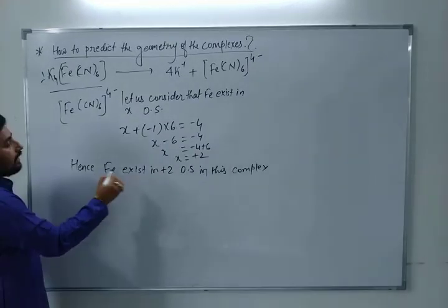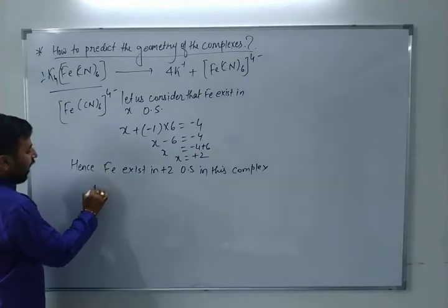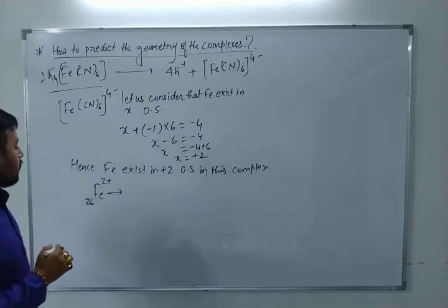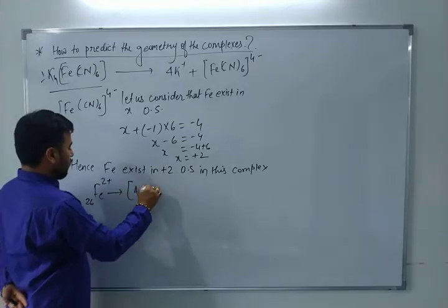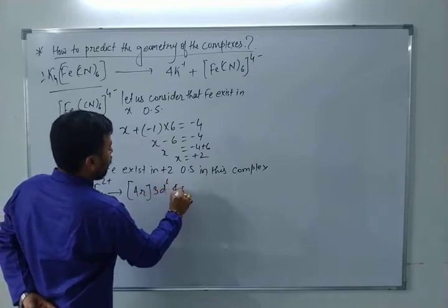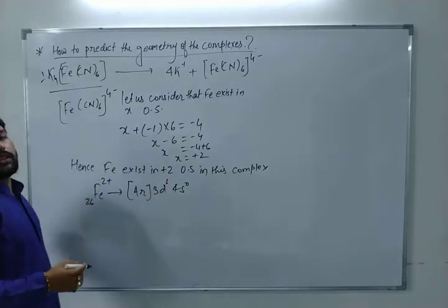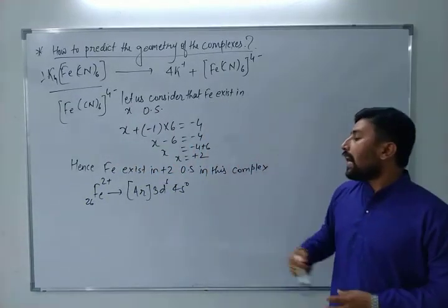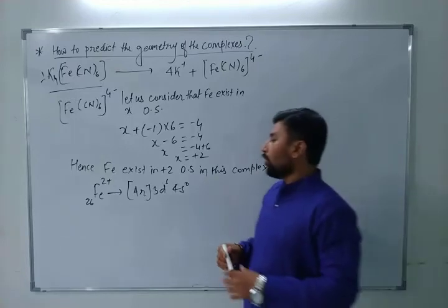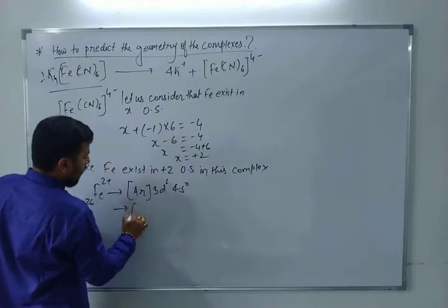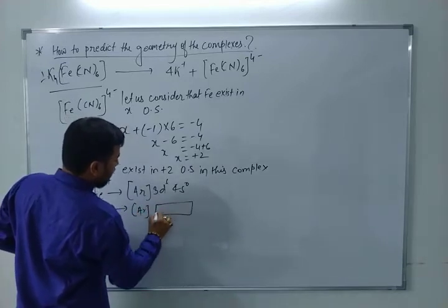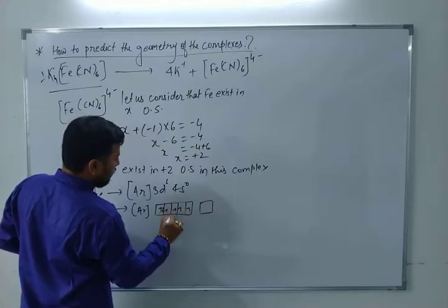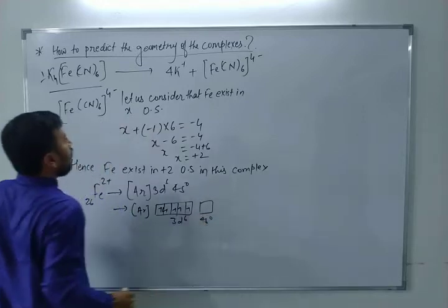Iron exists in +2 oxidation state, so we have Fe²⁺. The electronic configuration of iron in this compound is [Ar] 3d⁶ 4s⁰. You know iron is normally [Ar] 3d⁶ 4s², but since the oxidation state is +2, we write [Ar] 3d⁶ 4s⁰. So 3d⁶ means 6 electrons in the d-orbital.